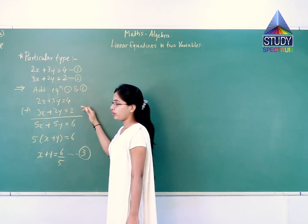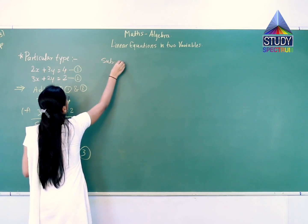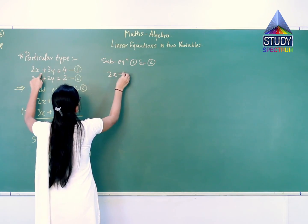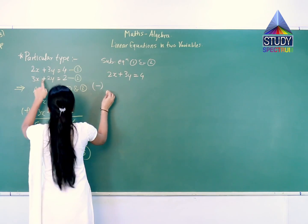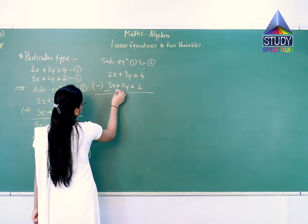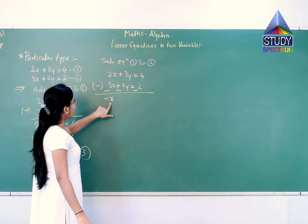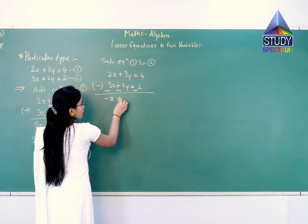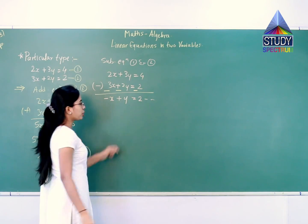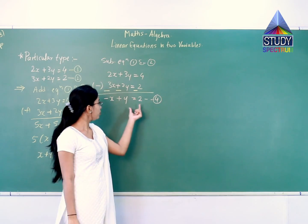Now we subtract them. Subtract equation 1 and 2: (2x plus 3y equals 4) minus (3x plus 2y equals 2). Since we are performing subtraction the signs change: 2x minus 3x gives minus x, and 3y minus 2y gives y, and 4 minus 2 gives 2. So we got equation number 4: minus x plus y equals 2.